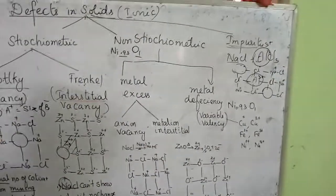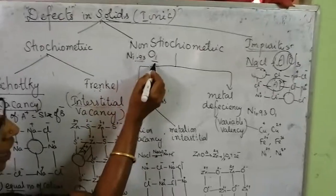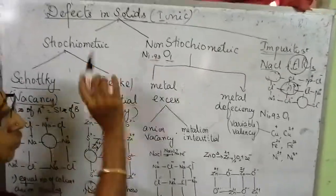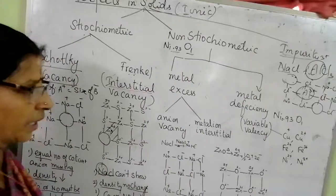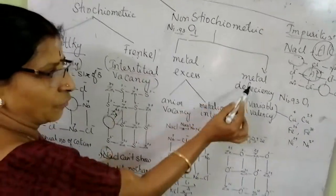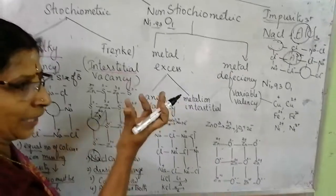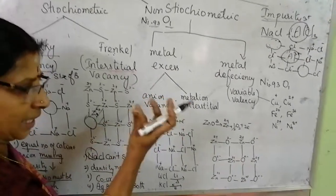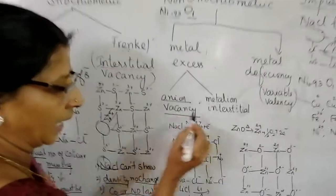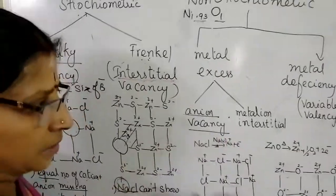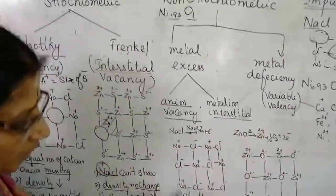Now let us come to the non-stoichiometric defect. There are two types: metal excess defect and metal deficiency defect. Metal excess means metal ion (cation) is in excess. This can happen either because anions are vacant, or because metal ions occupy the interstitial voids.